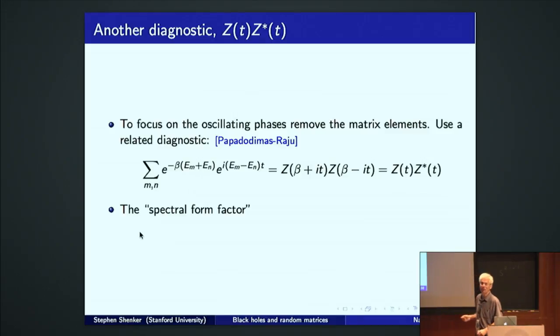So we strip out the matrix elements and we consider this closely related quantity. This double sum, here we have a Boltzmann weight for both energies to control them, of these oscillating phases. We can write this double sum as just a partition function, which would be a single sum, at beta plus i t, times the partition function at beta minus i t, or as we'll call it, zz star of t. And this is the quantity we want to study today.